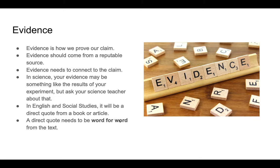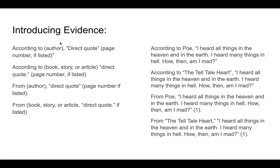A direct quote needs to be word for word from the text. Whenever you use evidence, you need to introduce it, and the most important thing is telling us the source. So: 'According to Poe, I heard all things in heaven and on earth. I heard many things in hell. How then am I mad?' — that's from The Tell-Tale Heart. You can identify the author, or you can identify the name of the book or short story: 'According to The Tell-Tale Heart, I heard all things in heaven and on earth.' You could also say 'From Poe...' If you're getting this from a book, include the page number; if it's from an article or web page, don't worry about the page number.